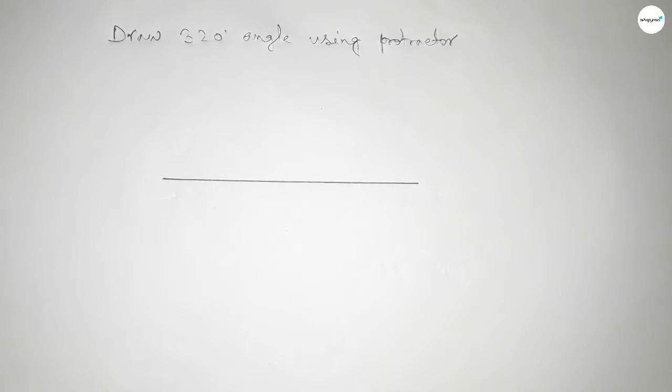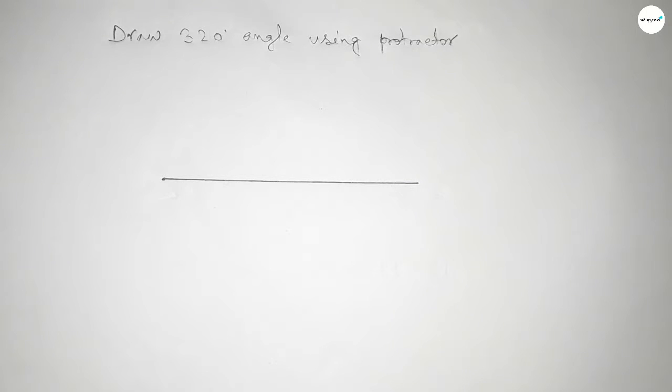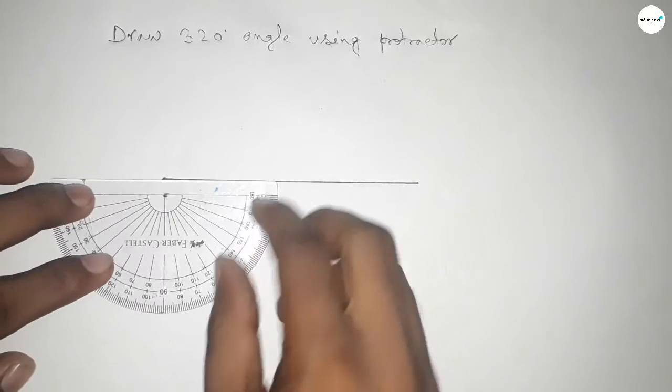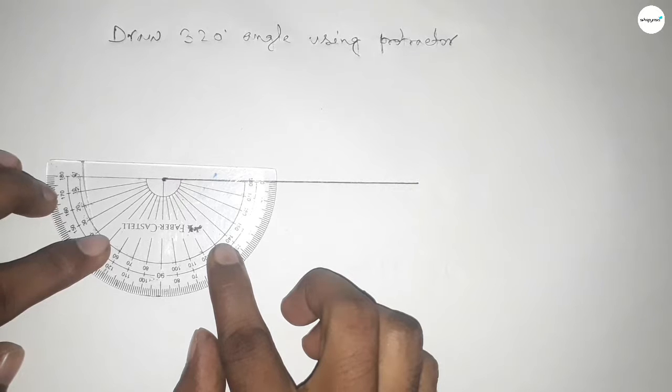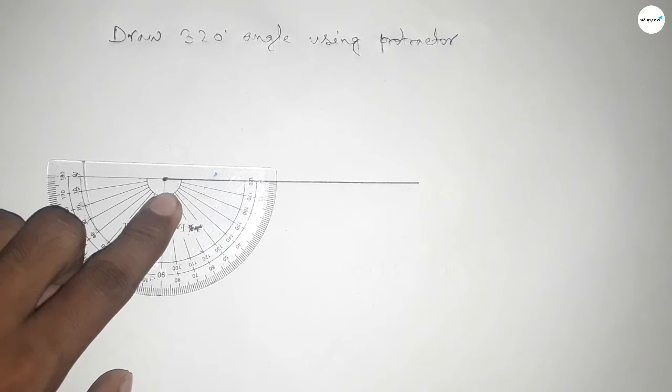First drawing here a line. Next, pointing out here to draw a 320-degree angle on this point. Now putting the protractor on the line perfectly. Now counting the angle.